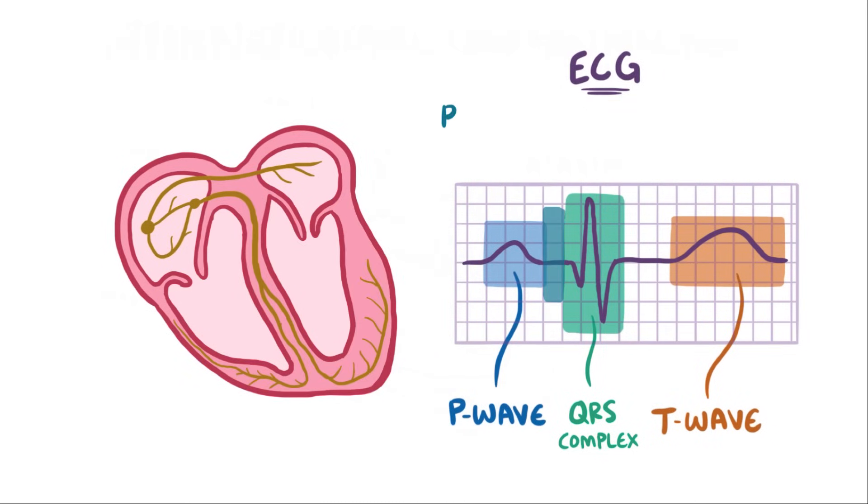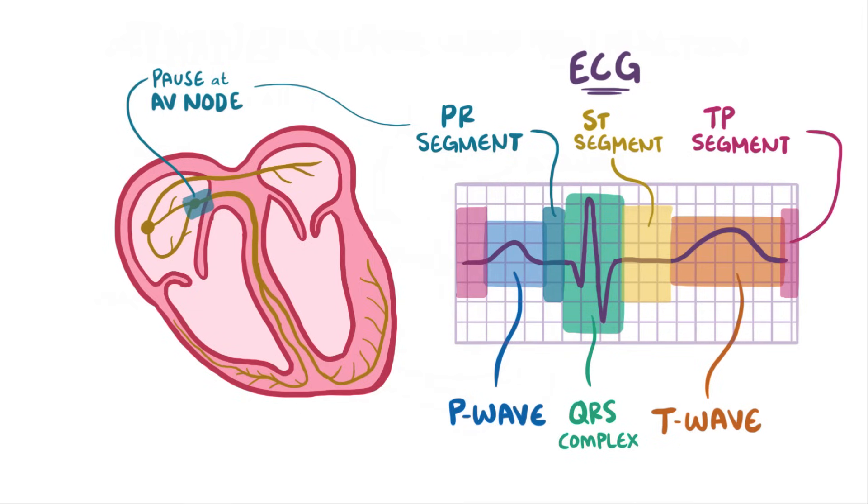This empty space here is called the PR segment, and it corresponds to the pause in the AV node. And this one is called the ST segment, and it corresponds to the interval between ventricular depolarization and repolarization. And this one is called a T-P segment, which represents the heart's quiet time when the cells are finished repolarizing and are ready for another signal.